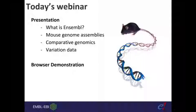Today's webinar will briefly cover what Ensembl is and give you a brief introduction if you're not familiar. We'll look at the mouse genome assemblies in Ensembl, where this data comes from, and the differences between these and the mouse reference assembly. We'll look at how you can use comparative genomics data to compare reference and mouse strain assemblies, and we'll look at variation data and how to find specific variants. We'll finish with a browser demonstration covering how to actually find this in Ensembl.